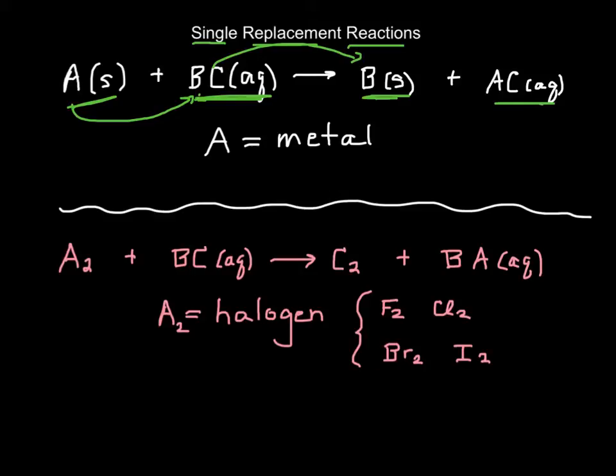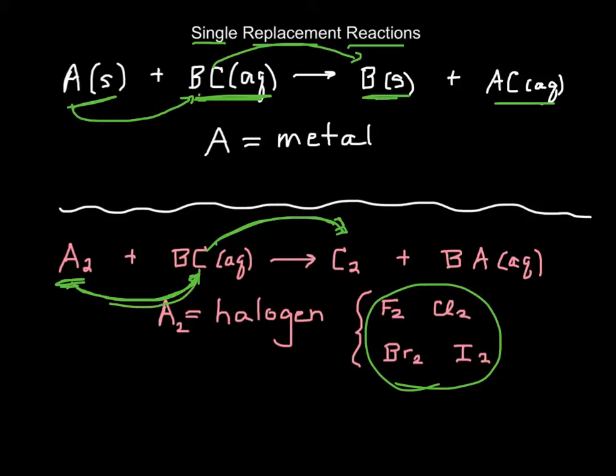Or I can take a halogen, like fluorine, chlorine, bromine, or iodine, and it's going to come in and replace the other halogen and kick that out. So single replacement, a single thing kicks out another thing. Metals always replace metals. Halogens always replace halogens.